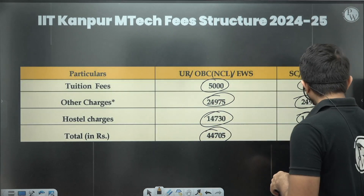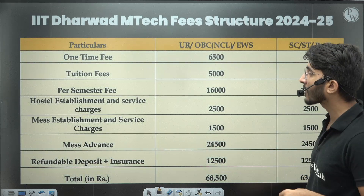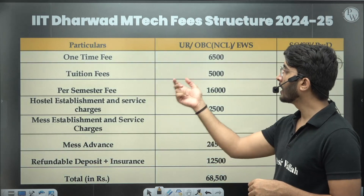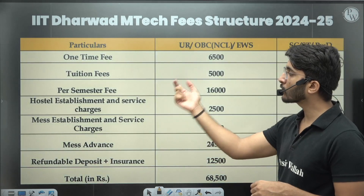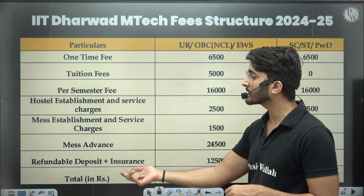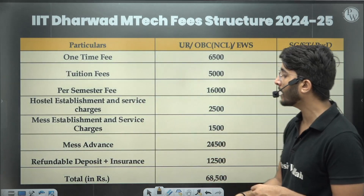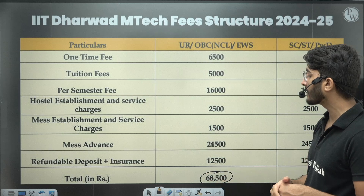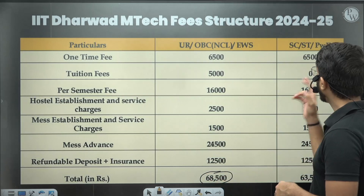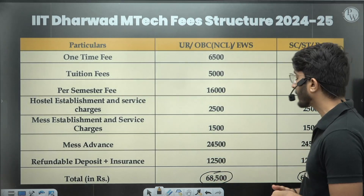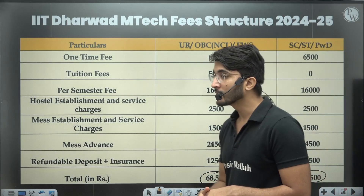If we talk about IIT Dharwad, one-time fees, tuition fees, per-semester fees, hostel establishment, mess establishment, mess advance, and refundable deposits total ₹68,500 you need to pay, and for SC/ST/PwD it is ₹63,500.